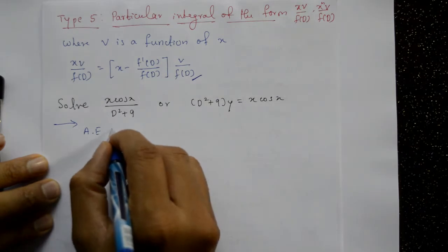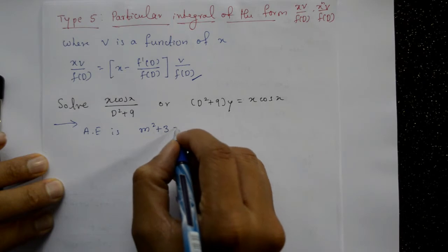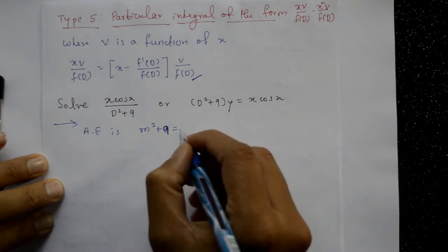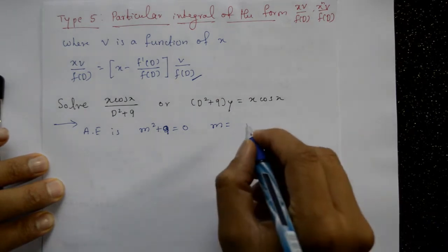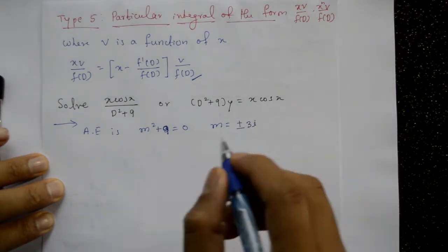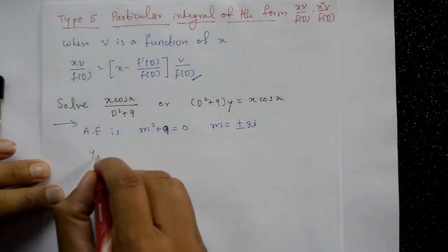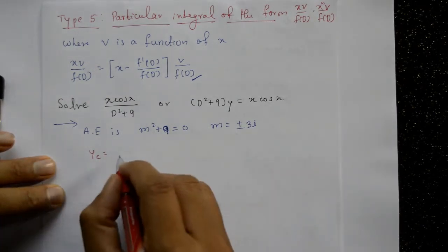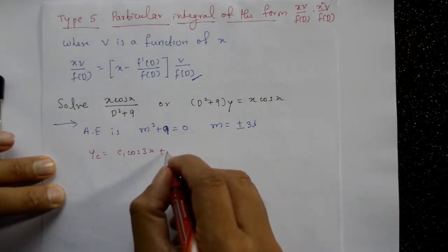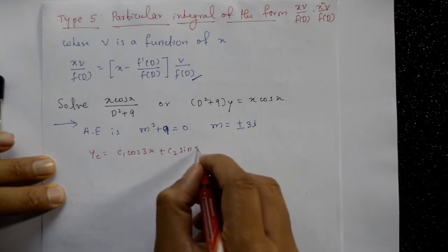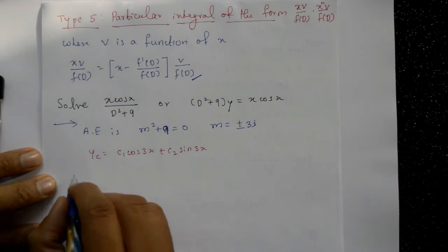The auxiliary equation is m²+9 = 0, so m = ±3i. The complementary function is yc = c₁·cos(3x) + c₂·sin(3x).